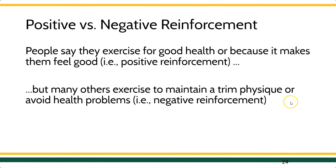We might also see, for instance, what happens with physical activity. Some people exercise for good health or because it makes them feel good — that might be positive reinforcement. But other people exercise because they want to avoid or prevent health problems from developing — maybe that's negative reinforcement. To know which is actually the reinforcer for the behavior, we might have to do something called a functional analysis. We'll come back to understanding function in a bit, but remember that really helps us identify and isolate the specific variable that's going on.